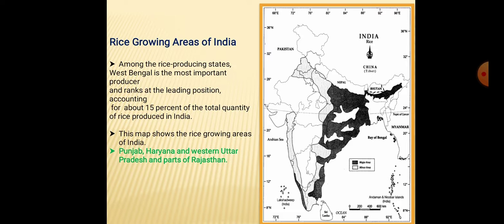Rice growing areas of India are Punjab, Haryana, western Uttar Pradesh and parts of Rajasthan. Among rice producing states, West Bengal is the most important producer and ranks at the leading position, accounting for about 15% of the total quantity of rice produced in India.